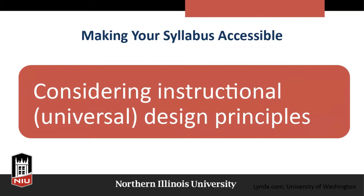Considering instructional universal design principles, we need to think about reading order, heading styles — we'll talk more about styles in a minute — and table headers. Not all tables are accessible; screen readers will often read from left to right across all headings and then line by line, so you should consider whether a table needs to be a table, or whether it could be a bullet-pointed or numbered list instead.